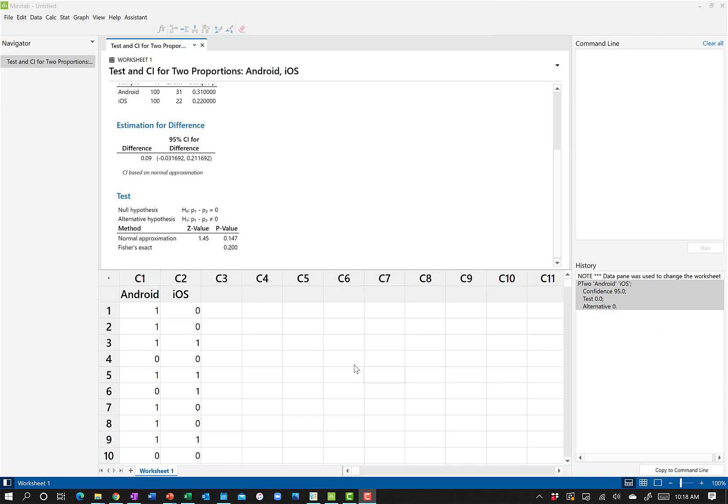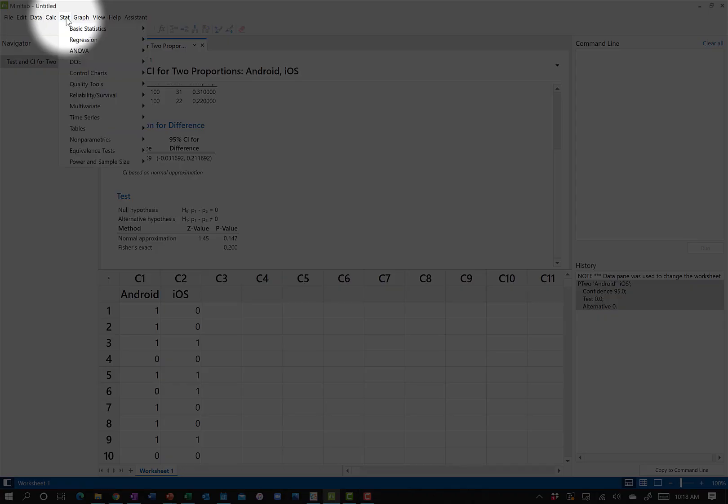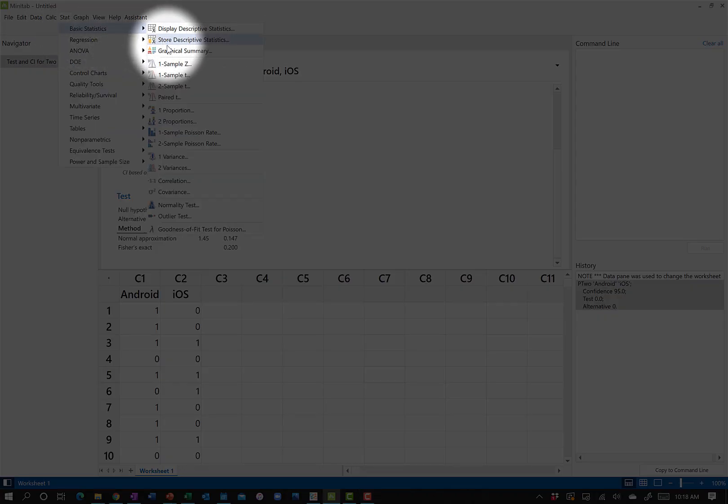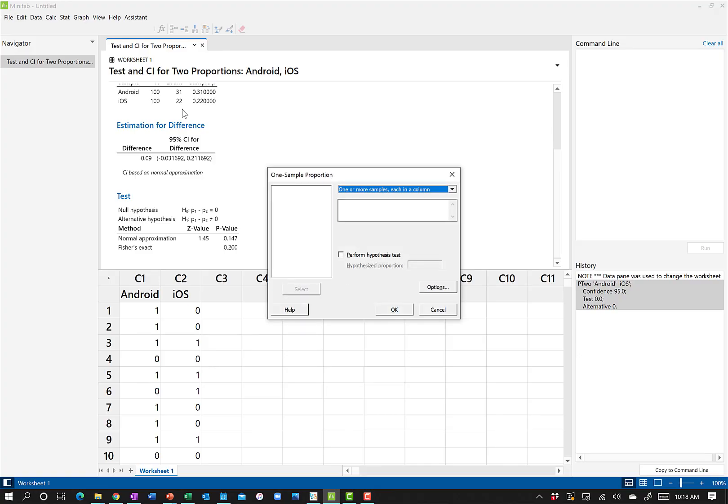All right. Now we're back here in Minitab to run our one-sample test of proportions to see if more than 25% of Android users turned on this feature. Under the same menu, Stat, Basic Statistics, but now we'll go to our One Proportion.